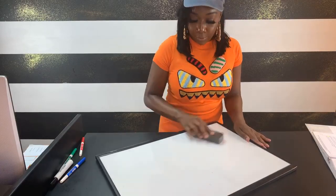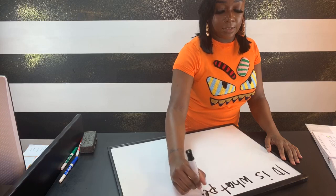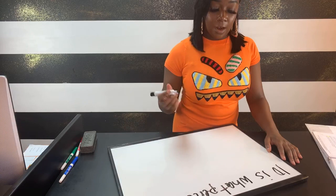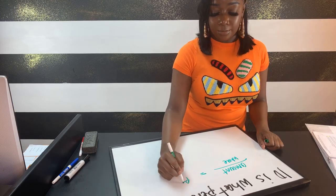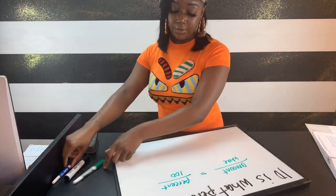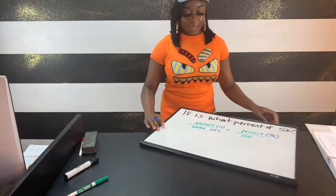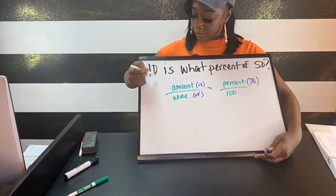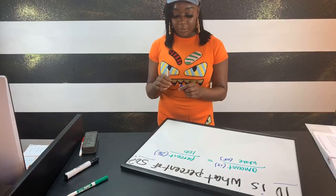If you're just tuning in, we are doing percent proportions. I definitely recommend writing the formula every time you see me write it, so you can memorize it — they won't give it to you on the test. The next example says: 10 is what percent of 50? Because 10 comes before the word 'is,' that's my amount. Because 50 comes after 'of,' that's my whole. So we're searching for the percentage.